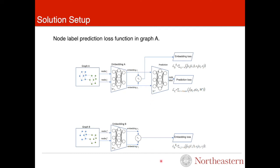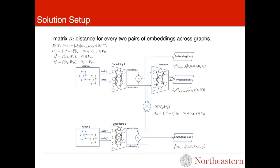First, we want to find the mapping between the nodes in two graphs. Second, we want the nodes that map to each other to have similar embeddings.